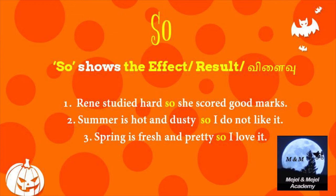More examples with 'so': 'Summer is hot and dusty, so I do not like it.' And: 'Spring is fresh and pretty, so I love it.' In each case — 'she scored good marks', 'I do not like it', 'I love it' — these are all results or effects, shown by 'so'.